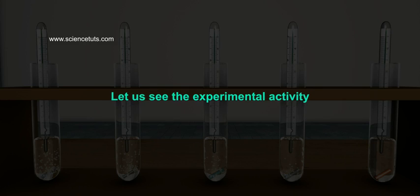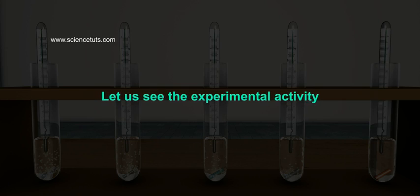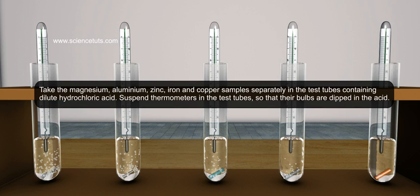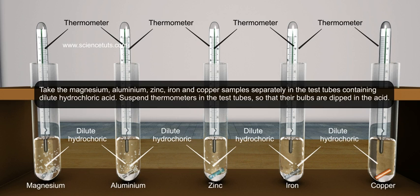Let us see the experimental activity. Take the magnesium, aluminum, zinc, iron, and copper samples separately in test tubes containing dilute hydrochloric acid.